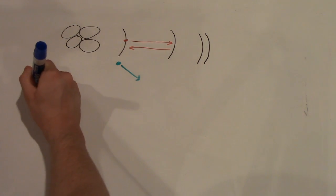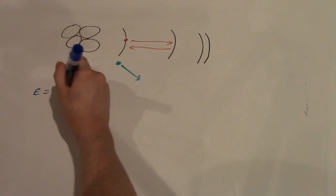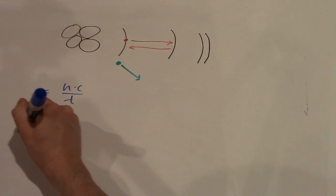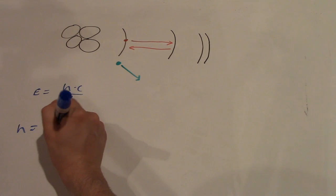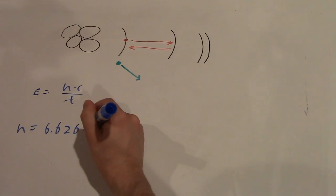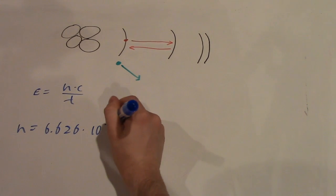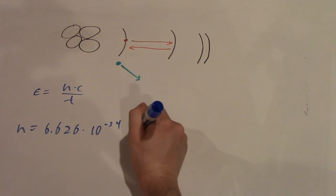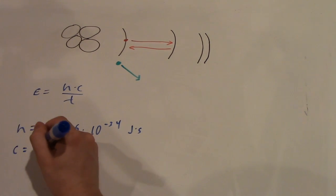Now, energy levels have constant values, so a drop from one level to another means a specific amount of energy is released. As I also mentioned in my light video, this specific energy means a specific wavelength, as indicated by the equation E equals Planck's constant times the speed of light over lambda.